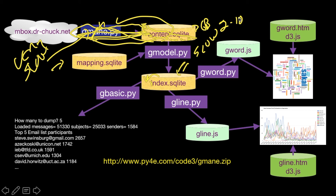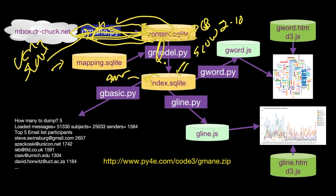gmodel maps names and when it's all said and done, it produces a very small, highly normalized, nice data model. content.sqlite has an ugly data model, but index.sqlite has a pretty data model with foreign keys and all the things we talked about in the database chapter where it's efficient. Keep track of how fast it is to scan all the data in a database with a bad model versus when you run gbasic, gline, or gword — they run in a couple of seconds at most. The difference is that the data is efficiently modeled in index.sqlite. You can take a look at that using SQLite Browser and see it has foreign keys just like the stuff we covered in the database chapter.